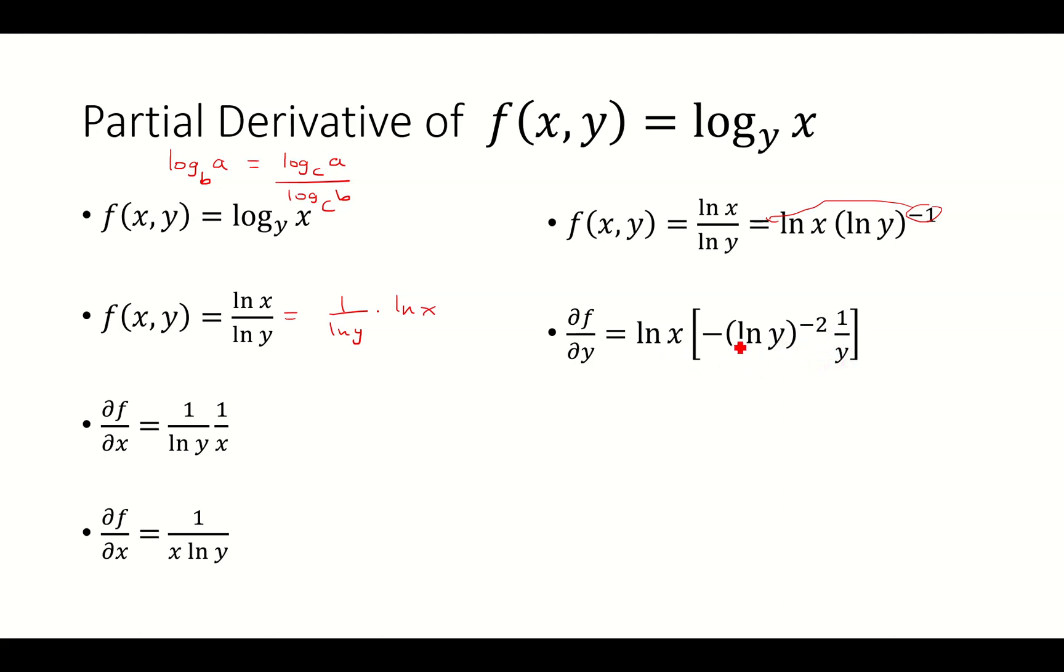So now negative natural log of y raised to negative 2 power, that goes in the denominator. So that's going to be 1 over y times natural log y quantity squared, and then we're going to have a negative natural log of x on top.